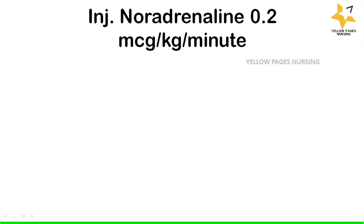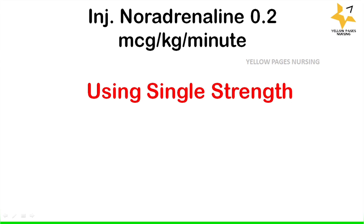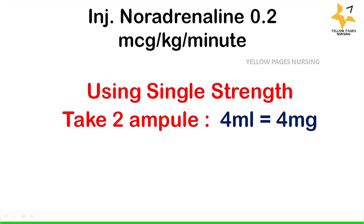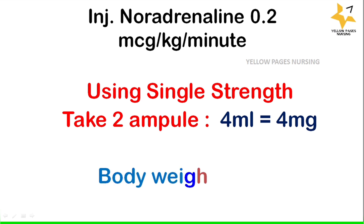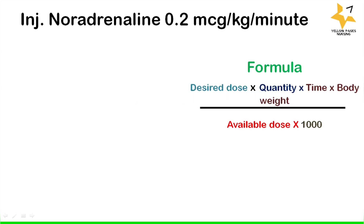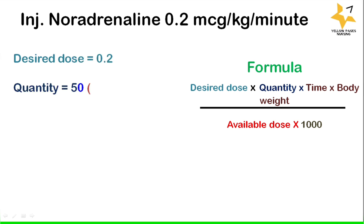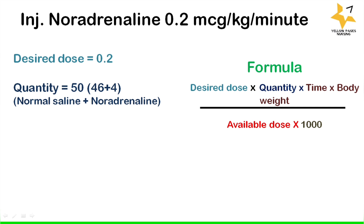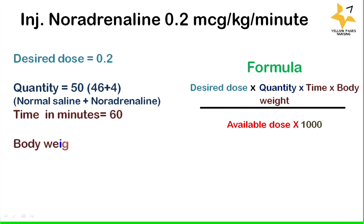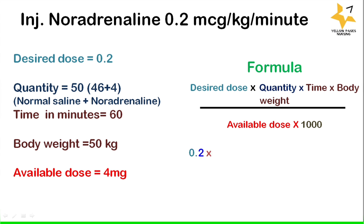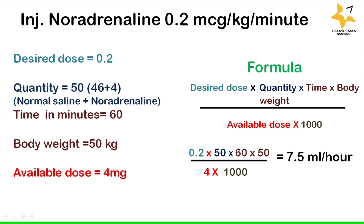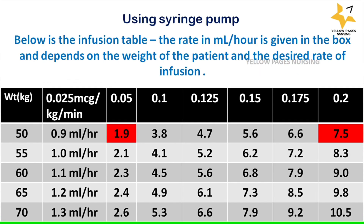Second example: injection noradrenaline 0.2 microgram per kg per minute using single strength — two ampoules, 4 ml containing 4 milligram, body weight 50 kg. Desired dose 0.2, quantity 50 (46 ml normal saline plus 4 ml noradrenaline), time 60 minutes, available dose 4 milligram. The answer is 7.5 ml per hour.